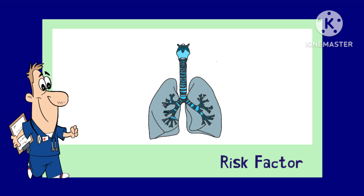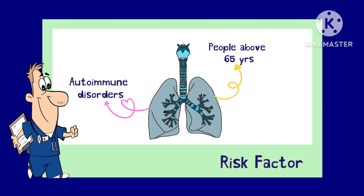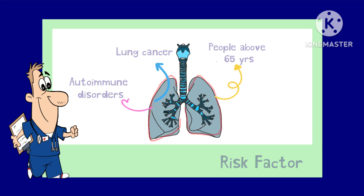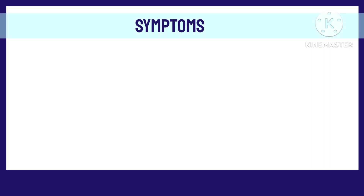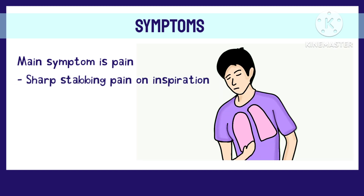Pleurisy may happen to anybody, but usually people above the age of 65 and people with autoimmune diseases or lung cancer are more prone to get affected by it. Coming on to the symptoms, the main symptom of pleurisy is pain — sharp and stabbing pain that occurs on inhalation.